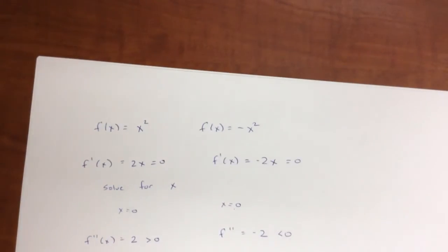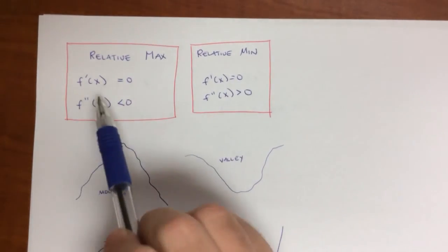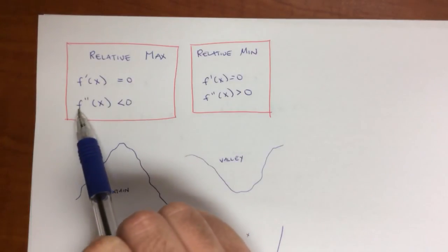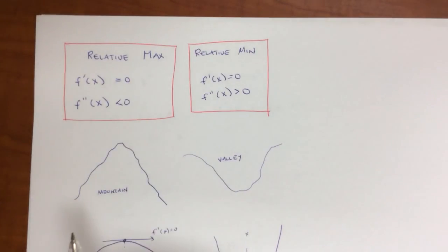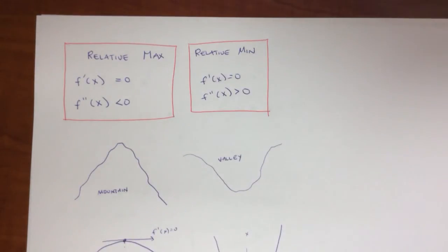And this is why this equation, these two conditions are very important. For a relative max, the first derivative we set equal to zero. Solve for x. And then we look at the second derivative to see is it a max or min. If it's less than zero, it's a max. Greater than zero, it's a min.